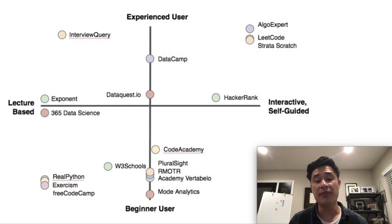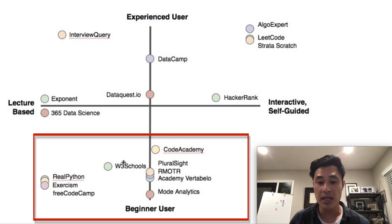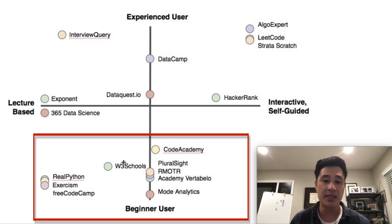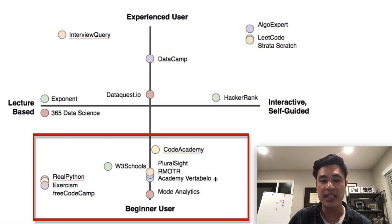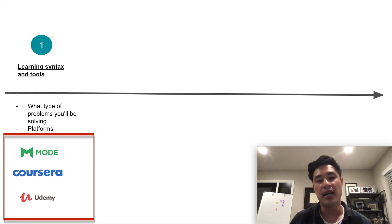At this stage, everybody is a beginner. You may have come out of university, still be in school, or have switched careers with only one or two coding classes under your belt — or no coding experience at all. The online resources you want to leverage are aimed at beginner users. I myself started with Mode Analytics, both the SQL and Python tutorials, which helped me learn SQL and Python well before moving to the next platform. I would also recommend complete data science or coding courses from Coursera or Udemy to give you the exposure you need to understand whether you're interested in data science.